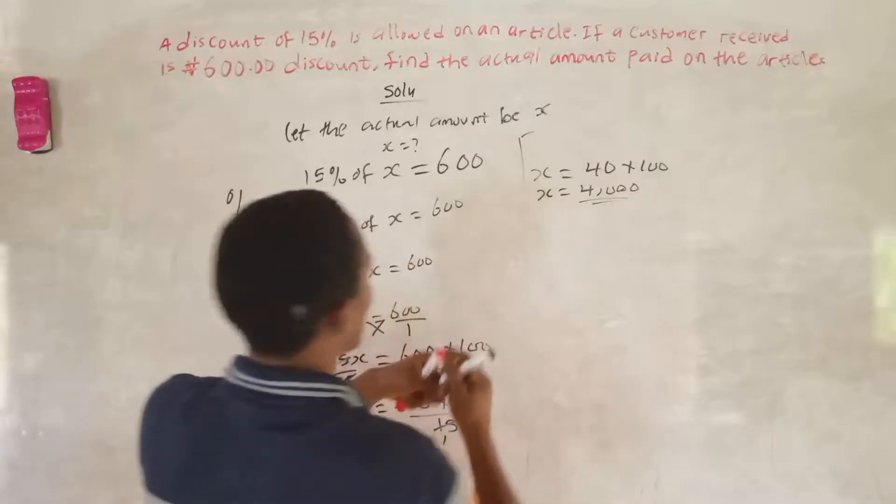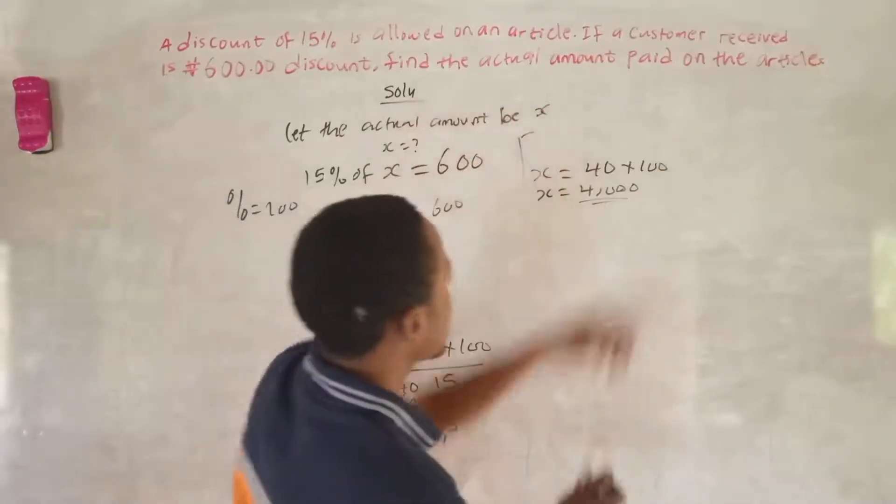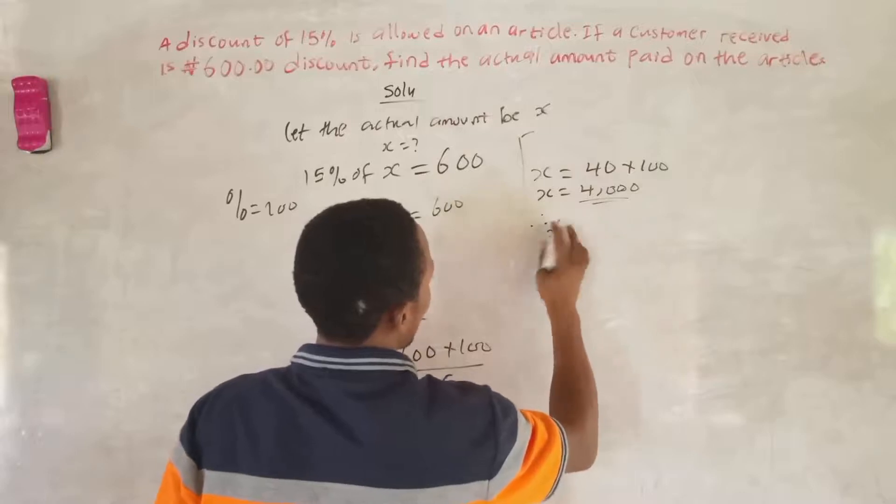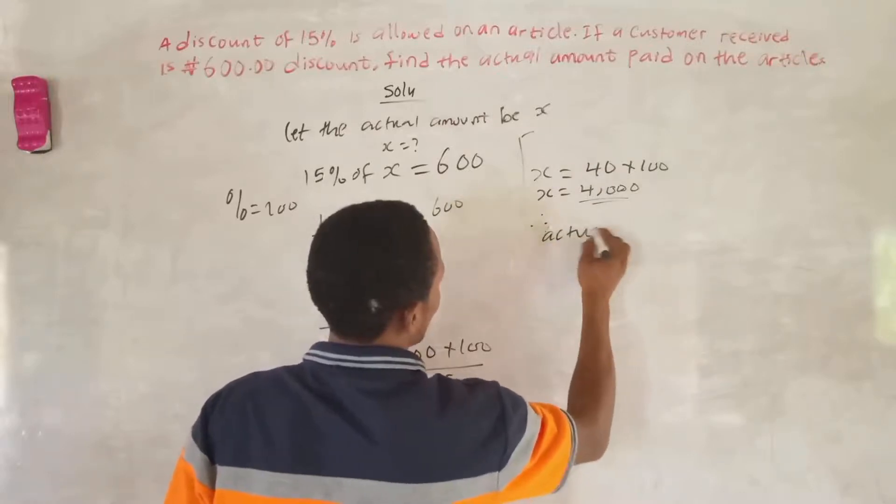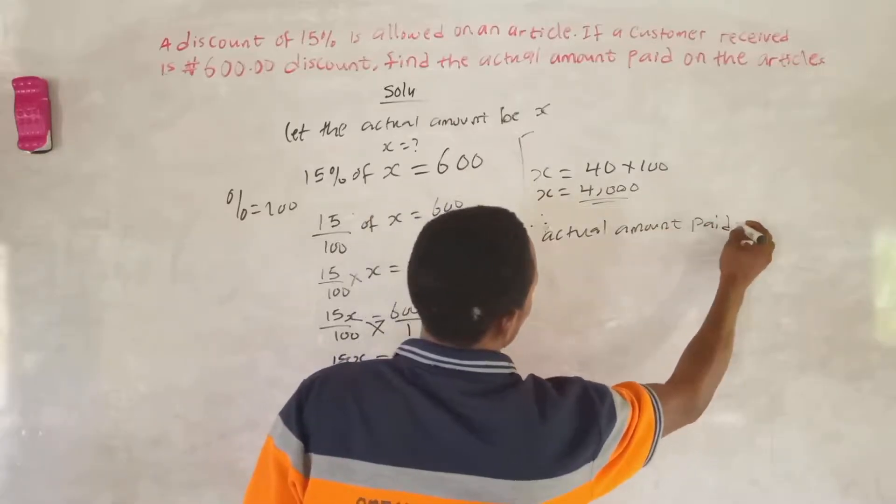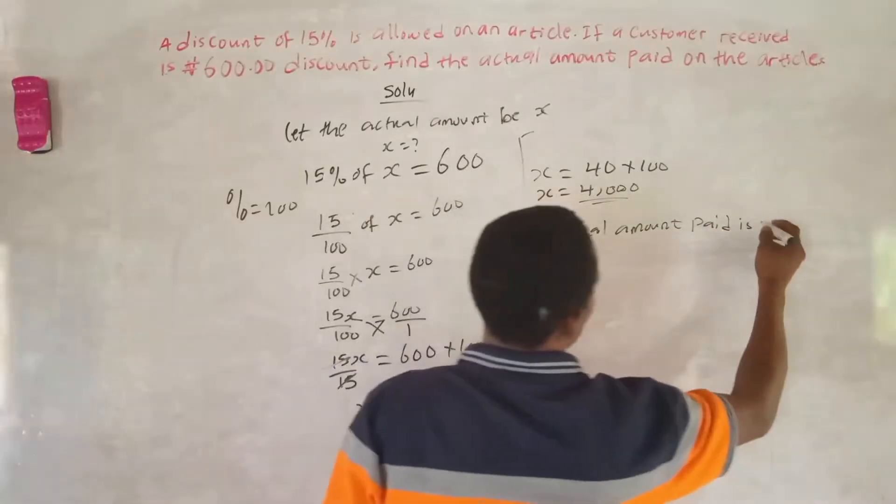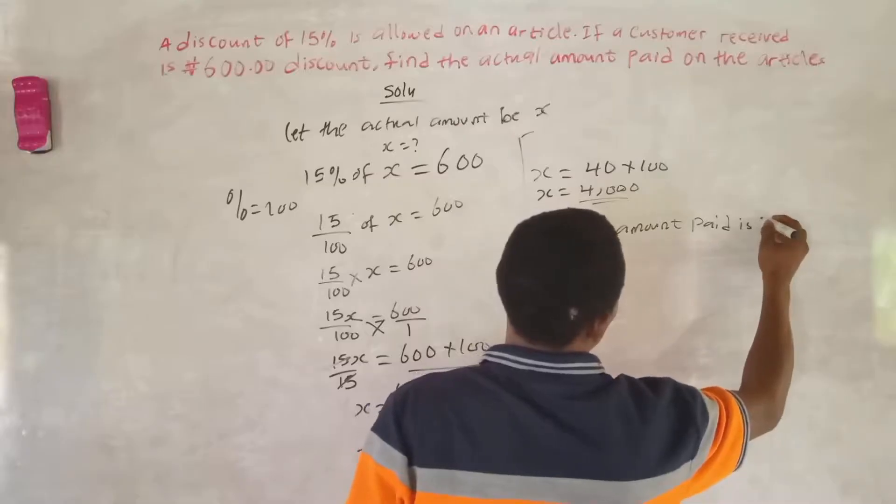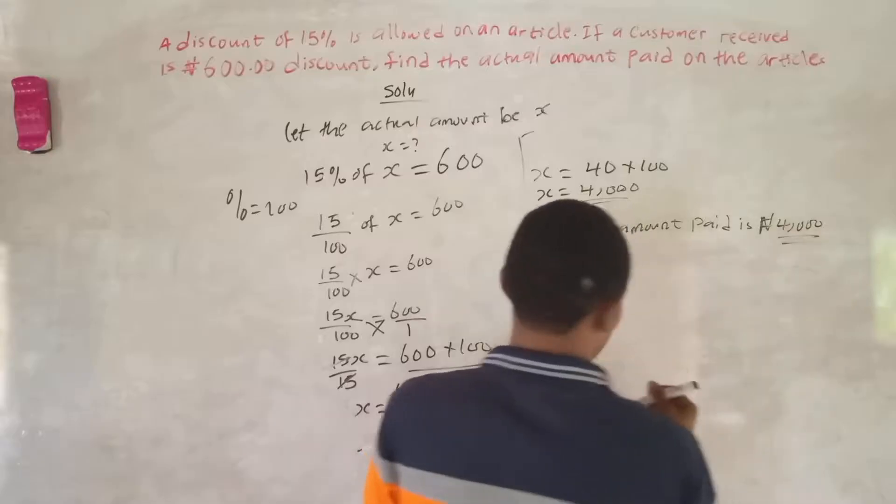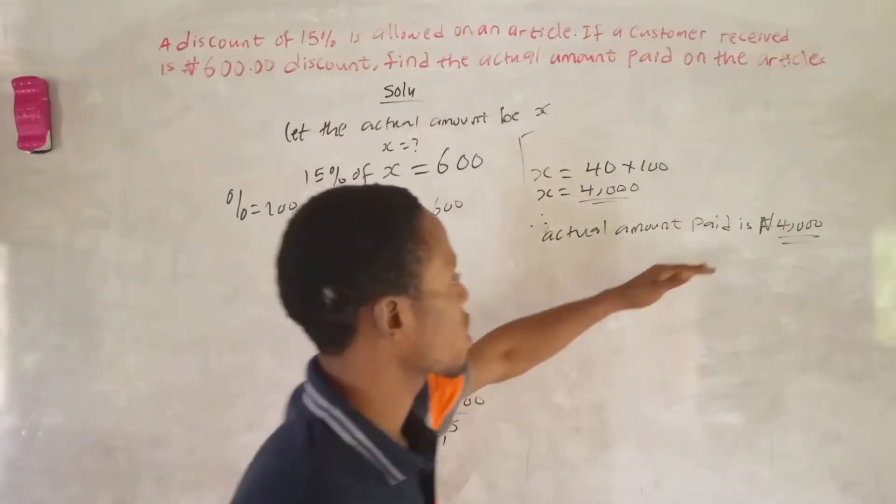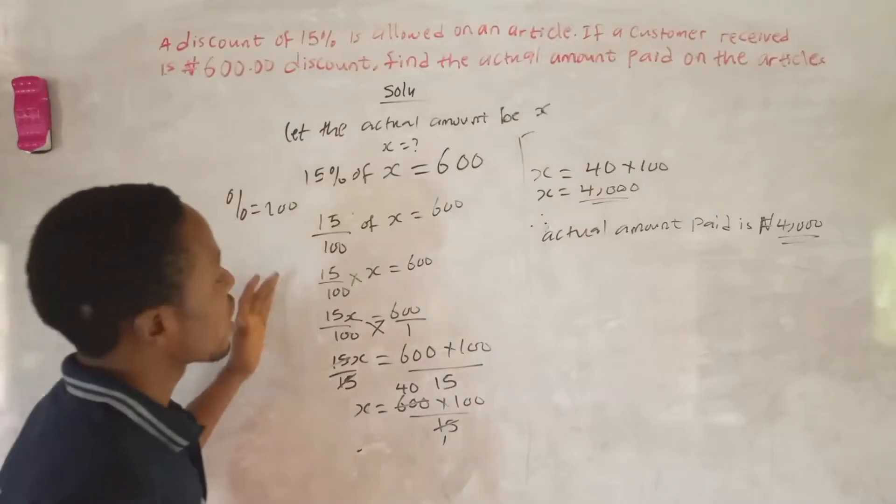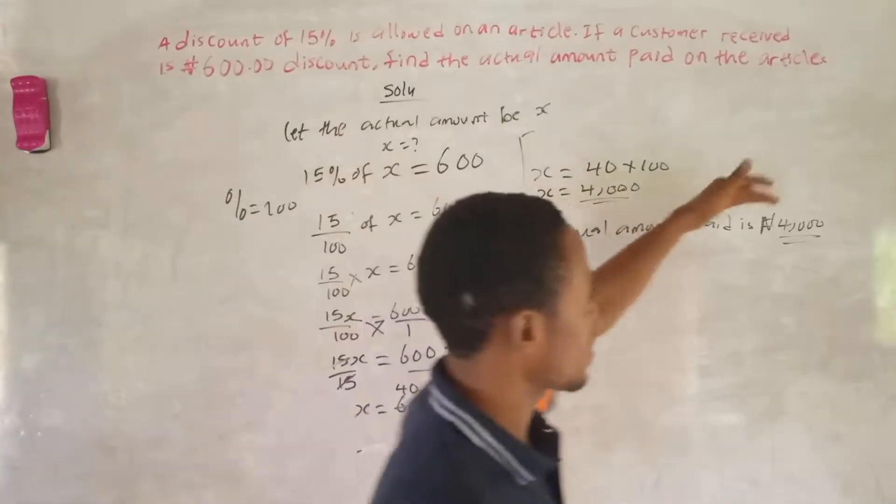So the actual amount paid on the article is 4000. Therefore, our actual amount paid is 4000. This is the actual amount paid on the article, 4000. So this question is very simple, you understand the way I do it now.